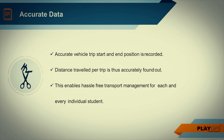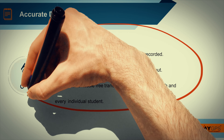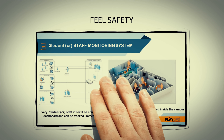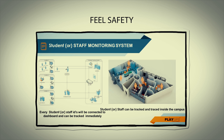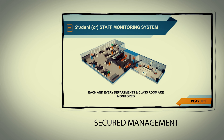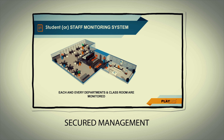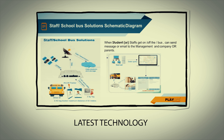Accurate data on vehicle trip start and end position is recorded, and distance traveled per trip is accurately calculated. This enables hassle-free transport management for each individual student or staff. Students and staff can be tracked and traced inside the campus. Every department and classroom is monitored — the device can be placed at the bus, school, room, classrooms, departments, and ID cards.